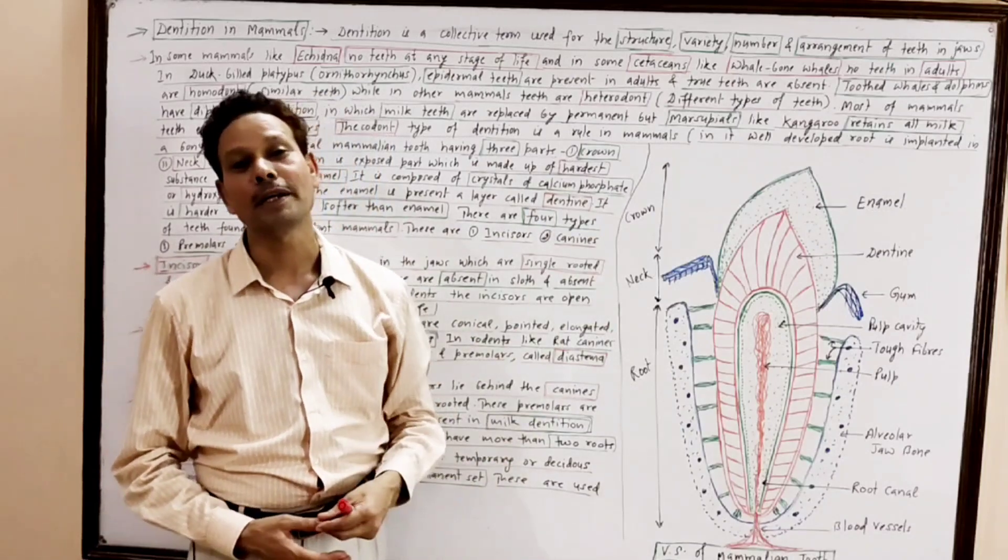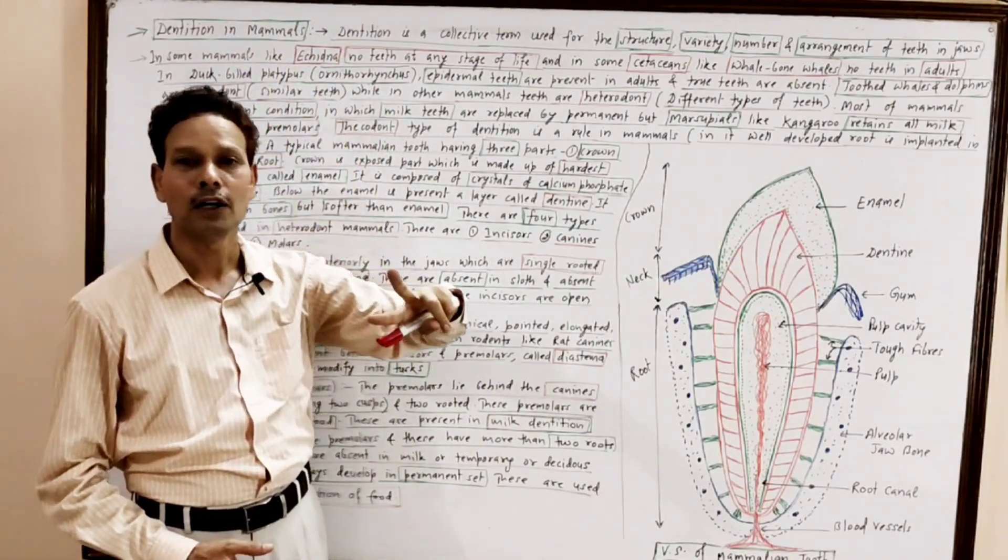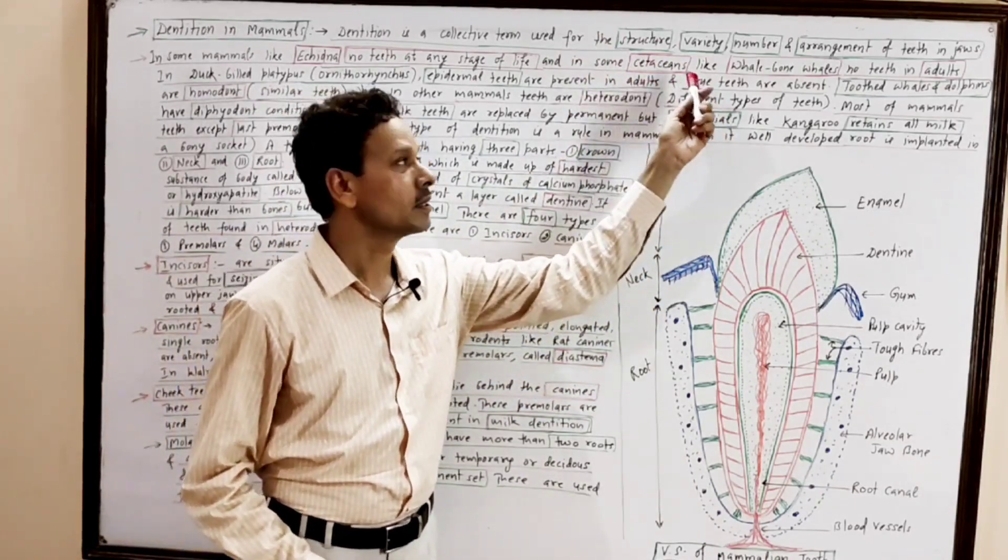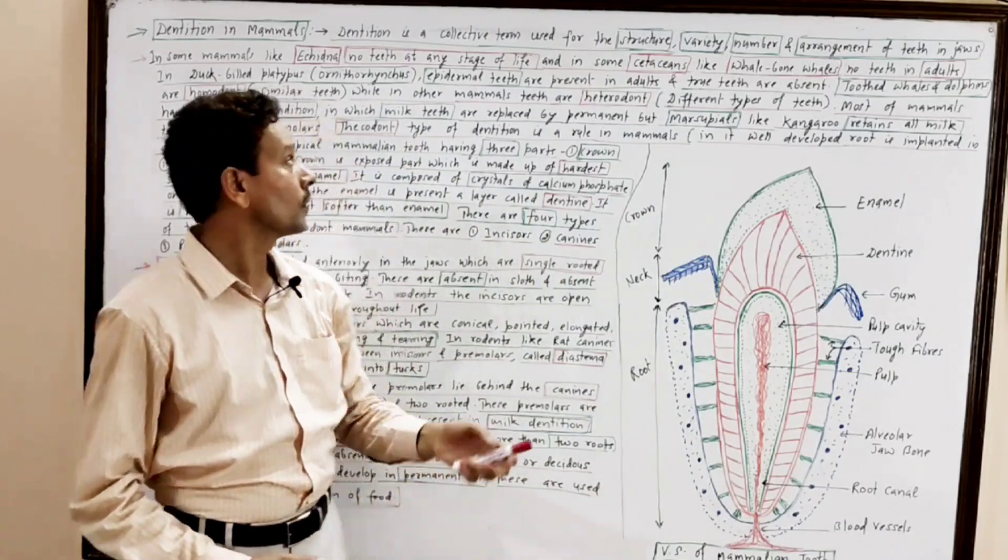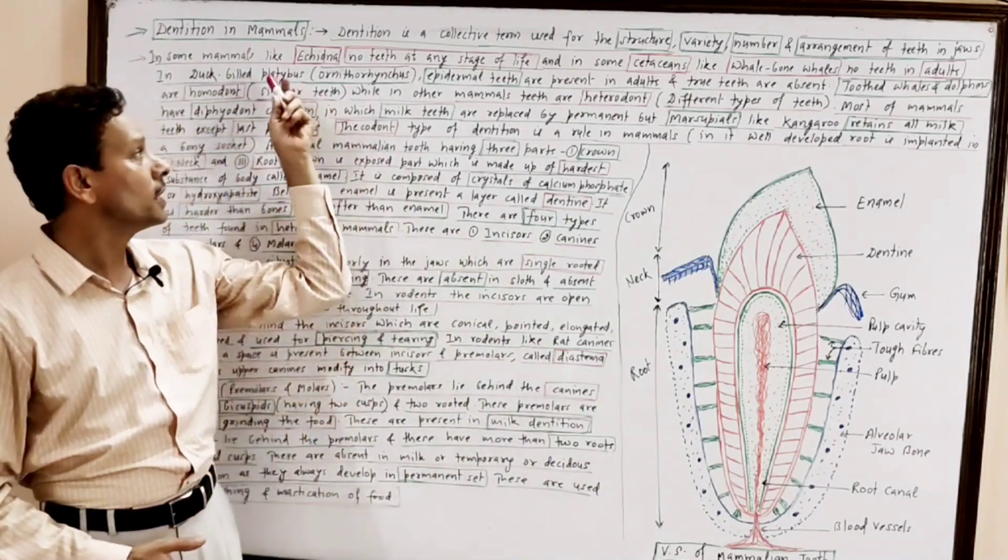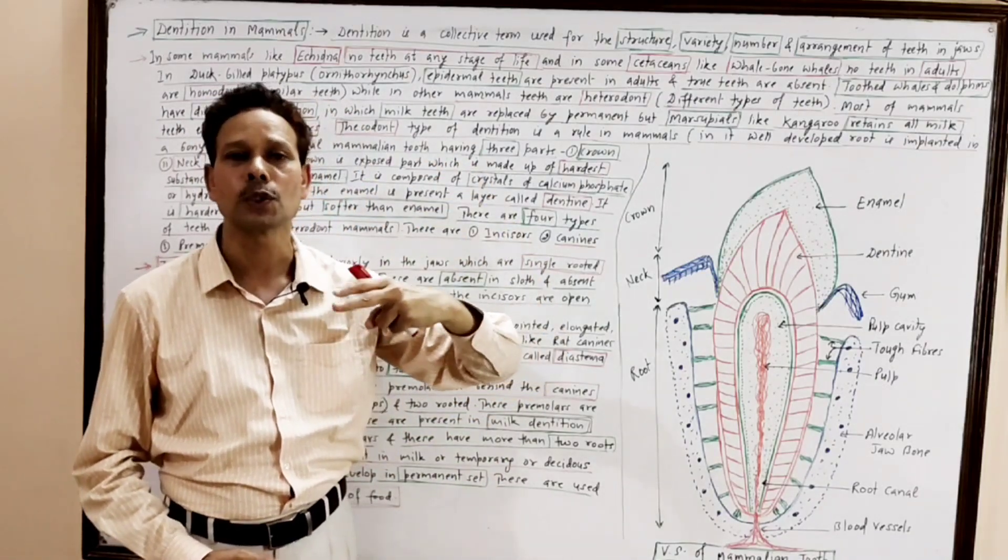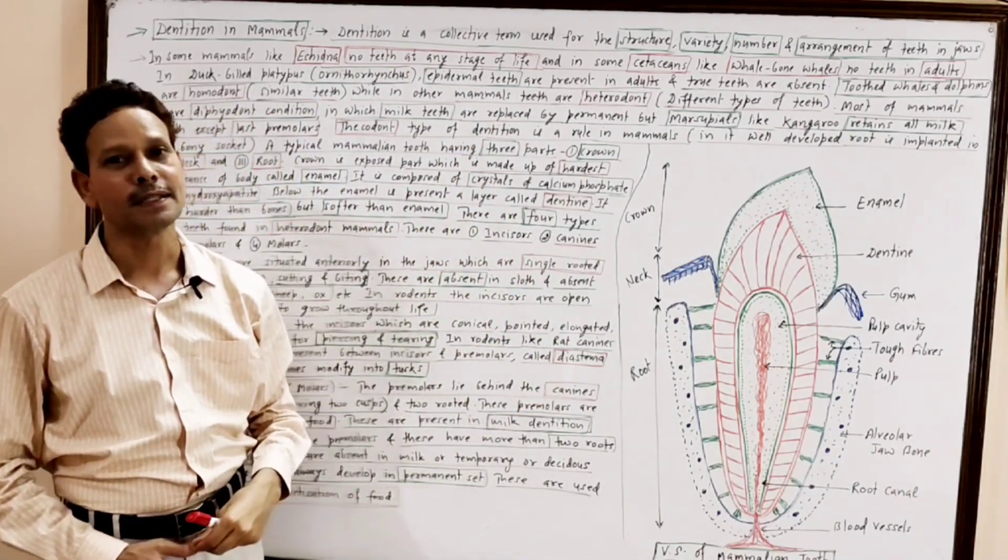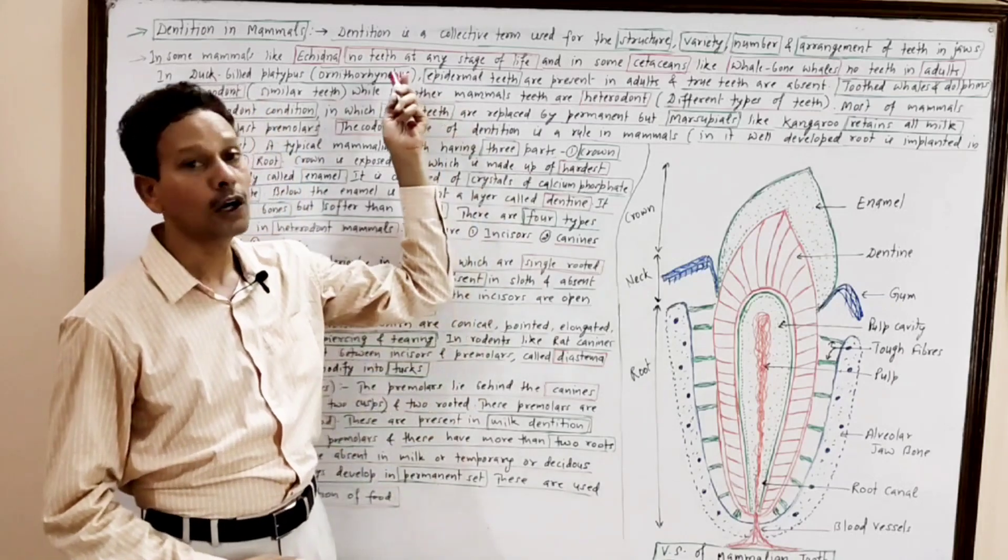In case of mammals, generally teeth are present. But in some mammals like spiny anteater echidna, no teeth at any stage of life. In some whales, cetaceans like whale-born whales, no teeth in adults. In duck-billed platypus, ornithorhynchus, no true teeth. Only teeth are derived from epidermis. So epidermal teeth are characteristic feature of duck-billed platypus. True teeth are absent in ornithorhynchus.